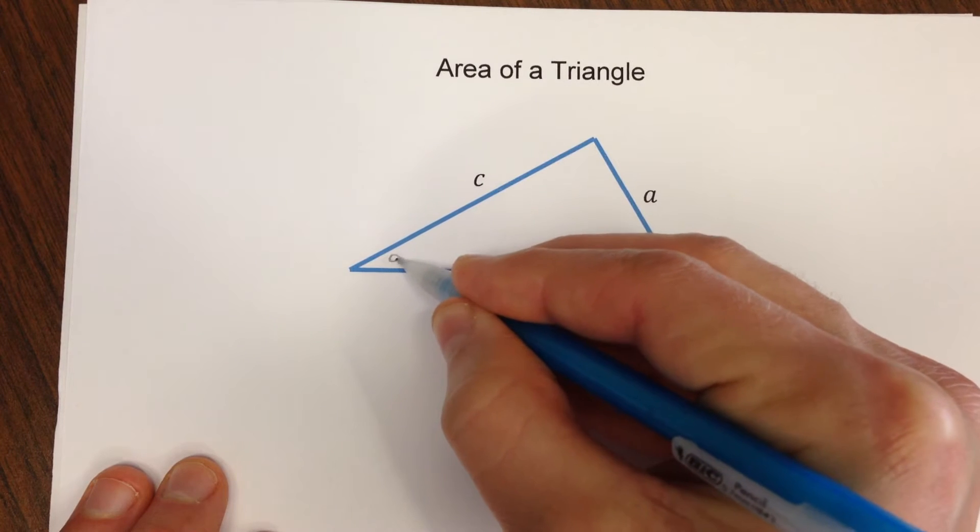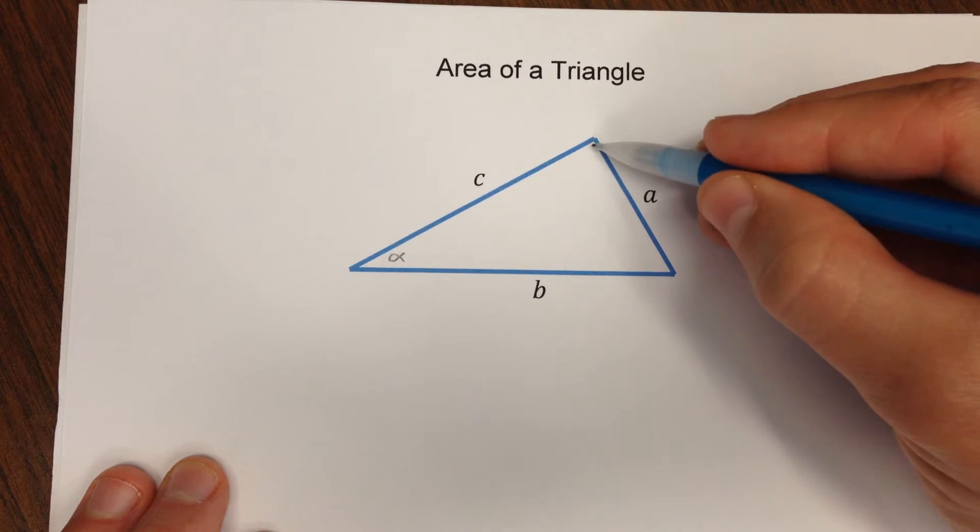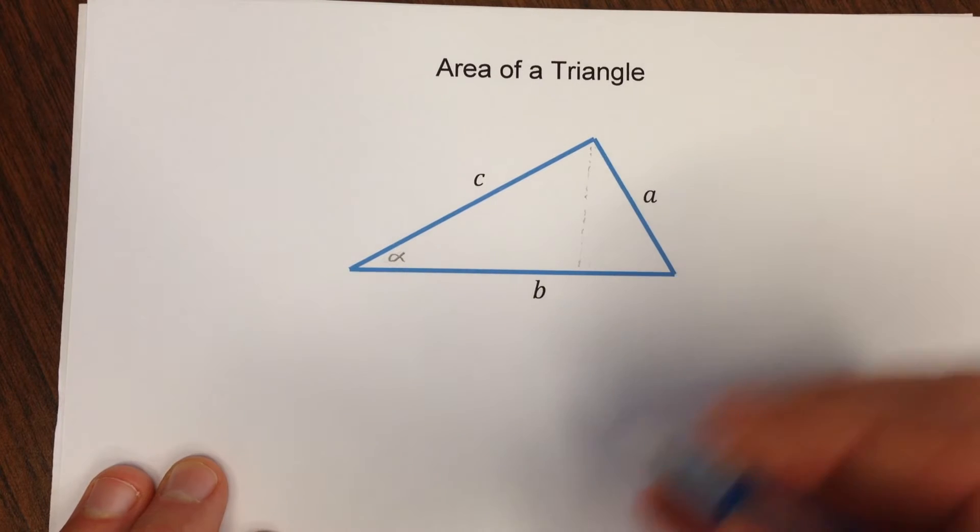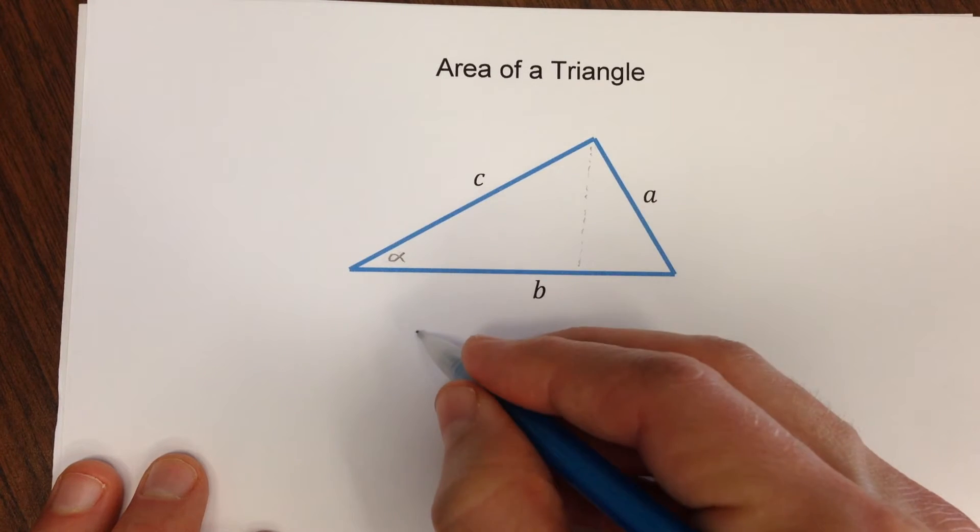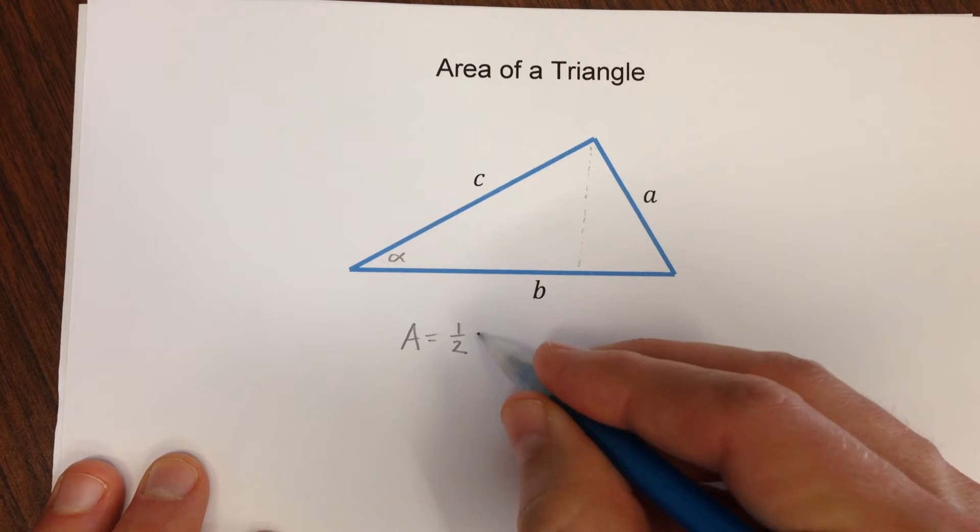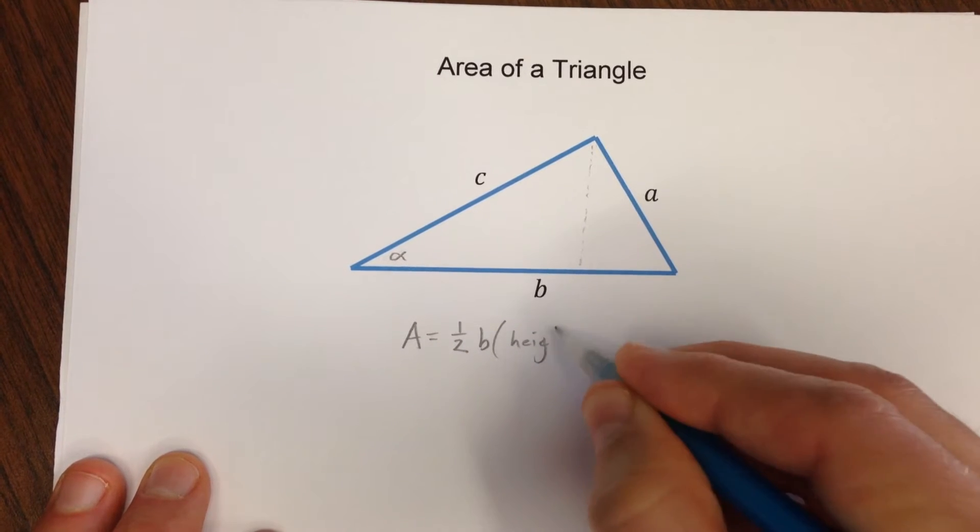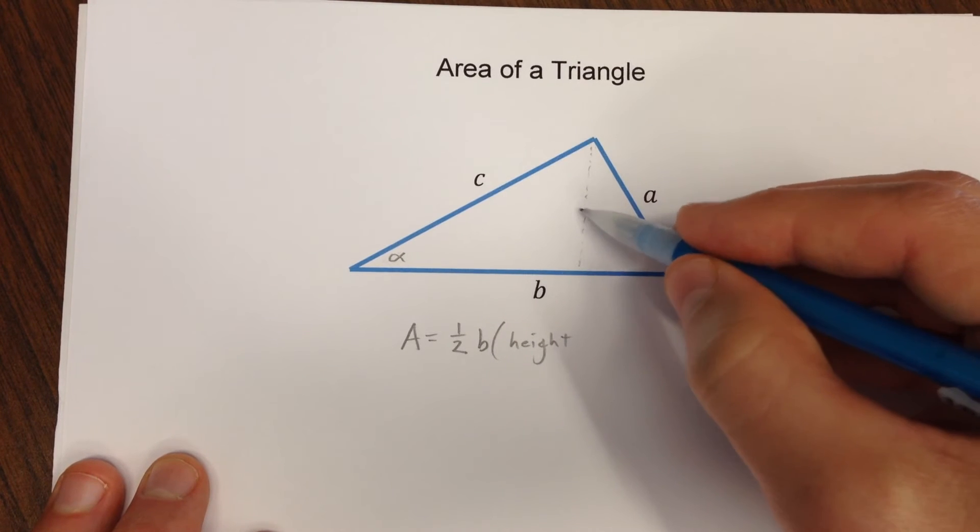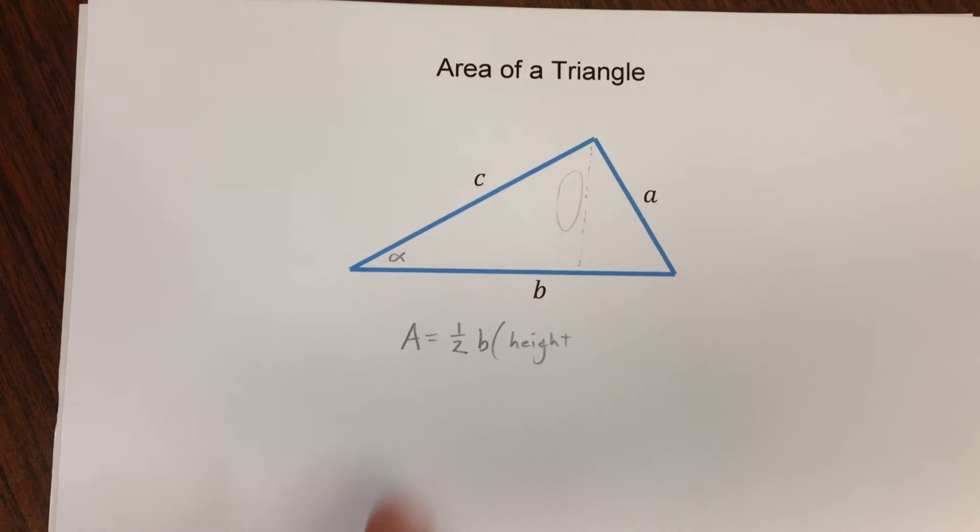Well one way is if you also have alpha, you can think about a triangle as simply being area equals one-half base, which is B, times the height. Well the height is right here. How do you find the height?